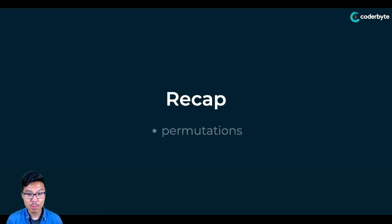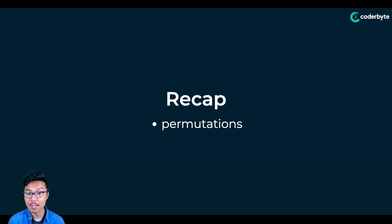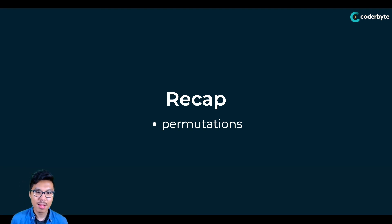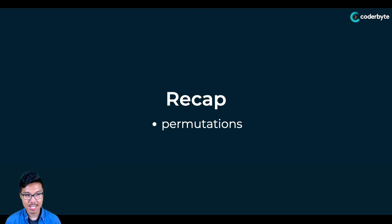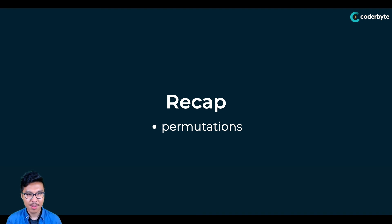So there we have it — we implemented permutations together. Key things to take away: if you're given n things, there are n factorial different permutations. You'll definitely want to understand how to visualize the process for generating permutations using that tree diagram. What you have to remember is from one permutation to the next, you insert each element in all possible positions. Head down to the link in the description and go to coderbyte.com where you can practice all of these different things. I'll see you in the next one.